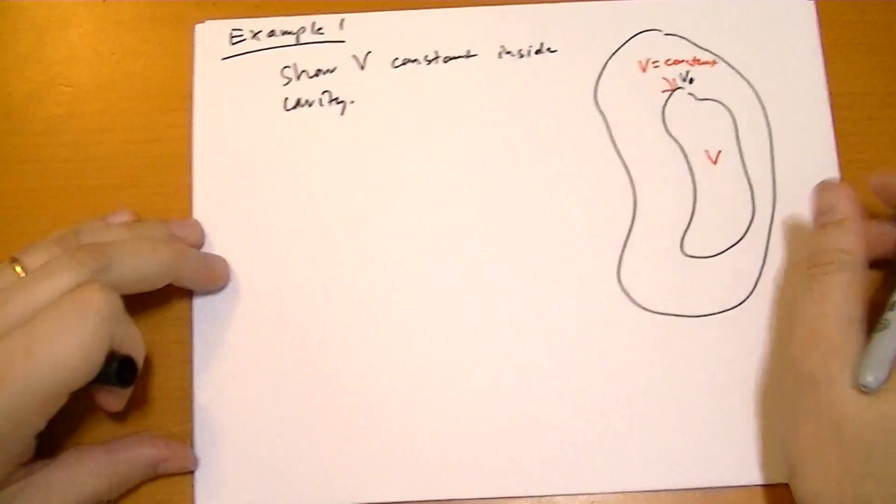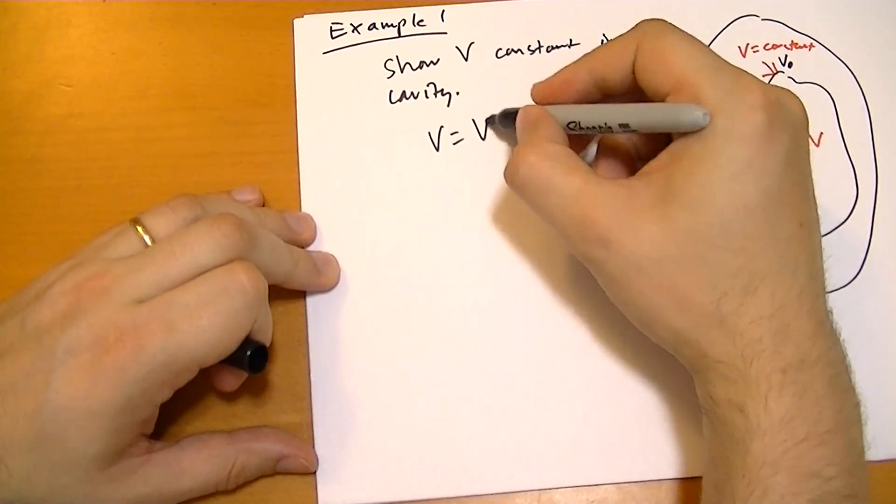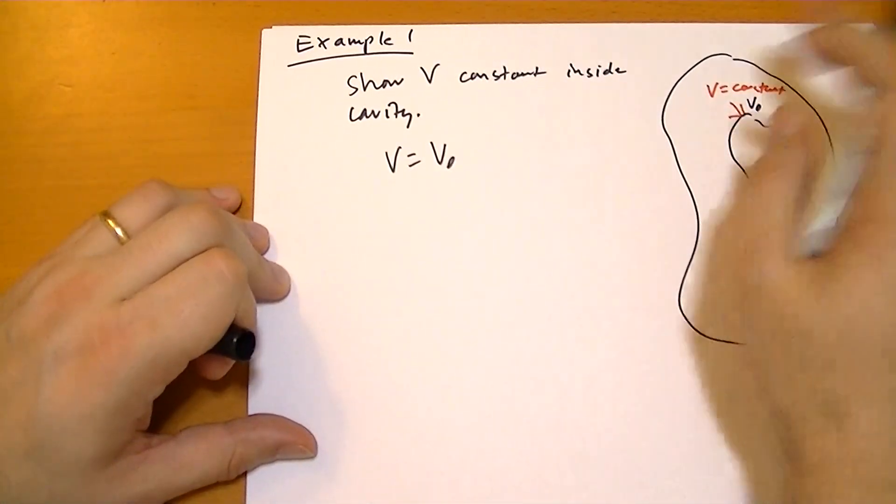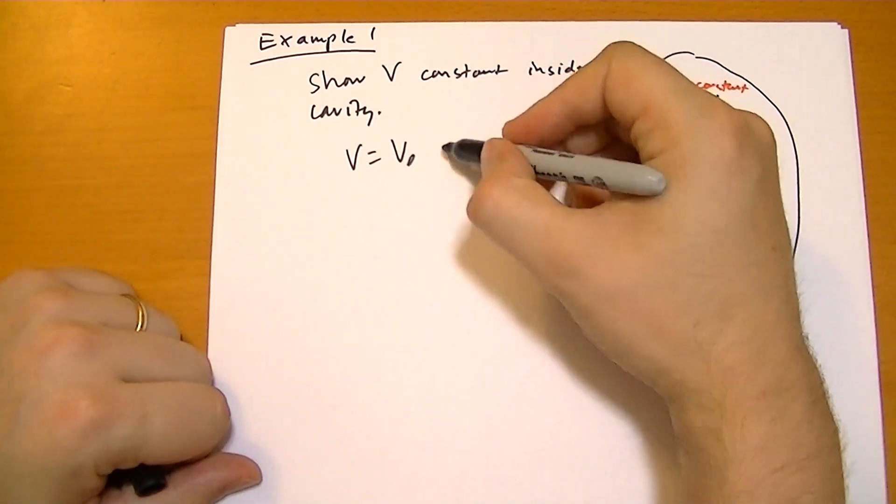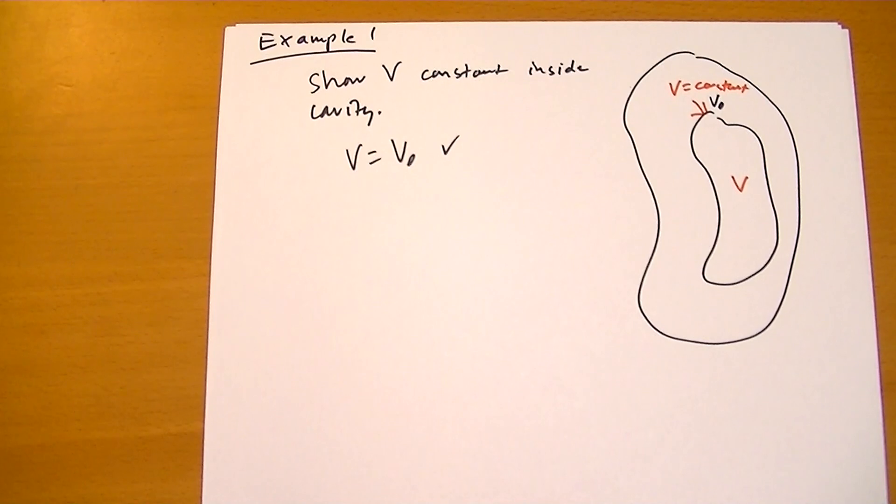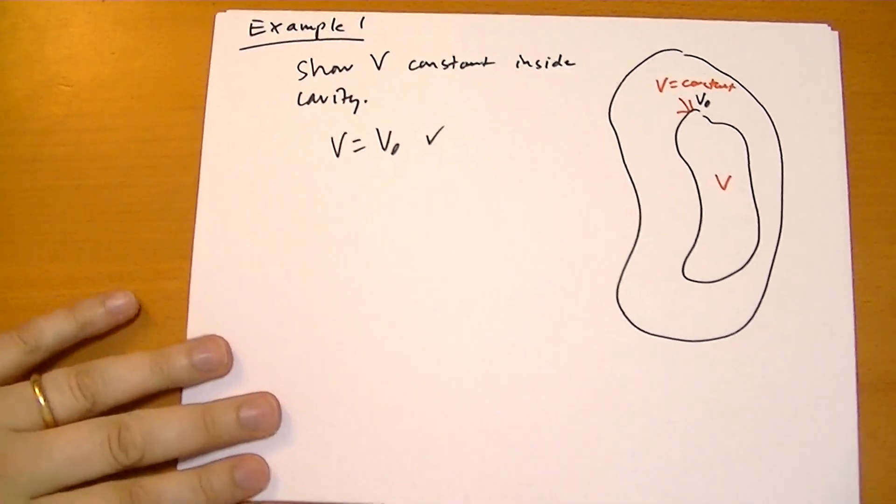I can think of a really easy solution for this. I just say, what if I had V equals V_0? Are the boundary conditions satisfied? Yeah, absolutely. And thanks to the uniqueness theorem, that's the answer. Because it's a solution, it's the solution. That's all the work you need to do to prove that, really.